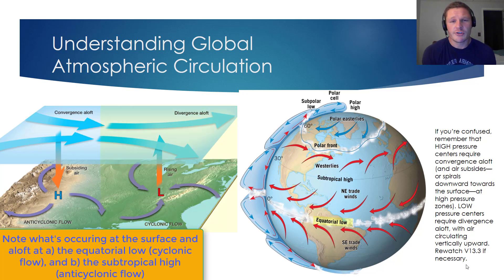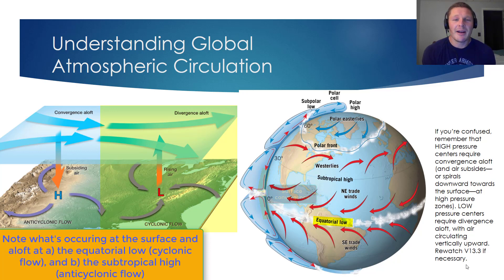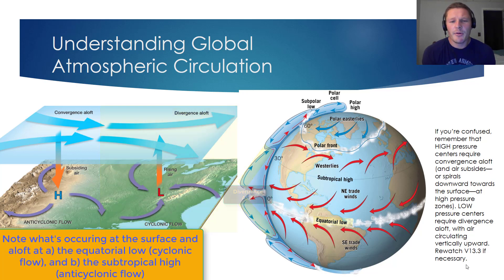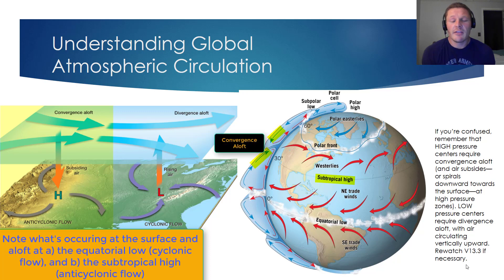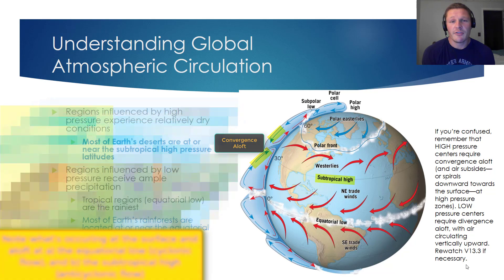If you look at the equatorial low-pressure region, we see convergence at the surface, as we should near a low-pressure zone. But high up in the atmosphere, we see divergence aloft — those arrows are moving away from each other, one going towards the north pole and one towards the south pole. At our high-pressure zones, we should see divergence near the surface and convergence aloft, which the arrows indicated here confirm.